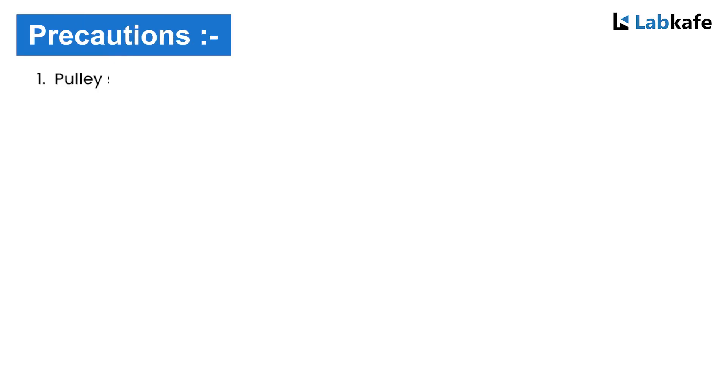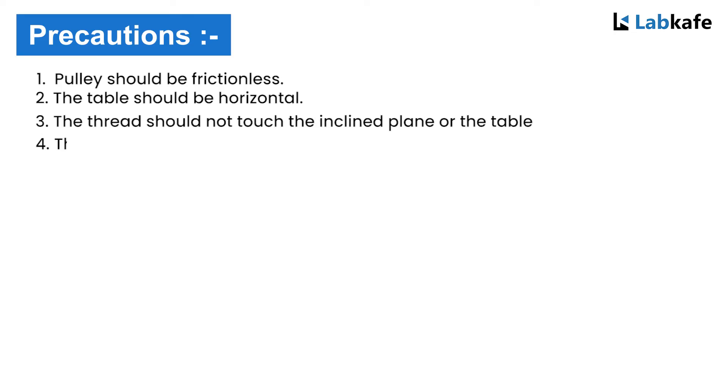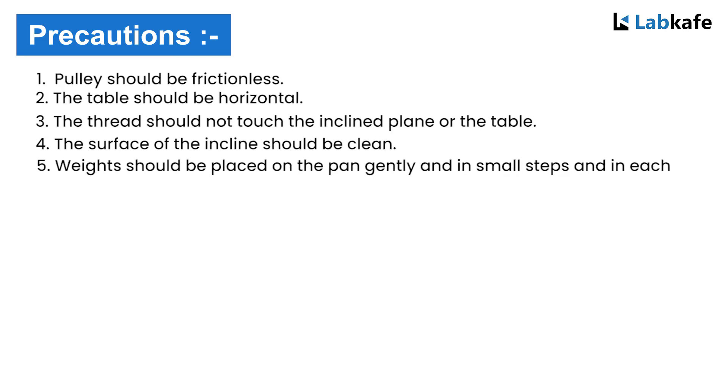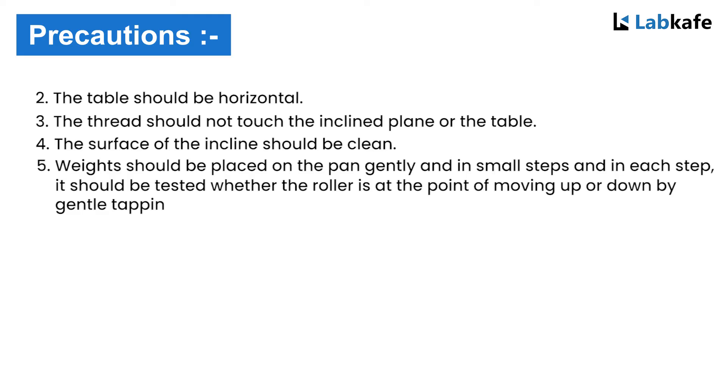Precautions: Pulley should be frictionless. The table should be horizontal. The thread should not touch the inclined plane or the table. The surface of the inclined plane should be cleaned. Weights should be placed on the pan gently and in small steps. In each step, it should be tested whether the roller is at the point of moving up or down by gently tapping.